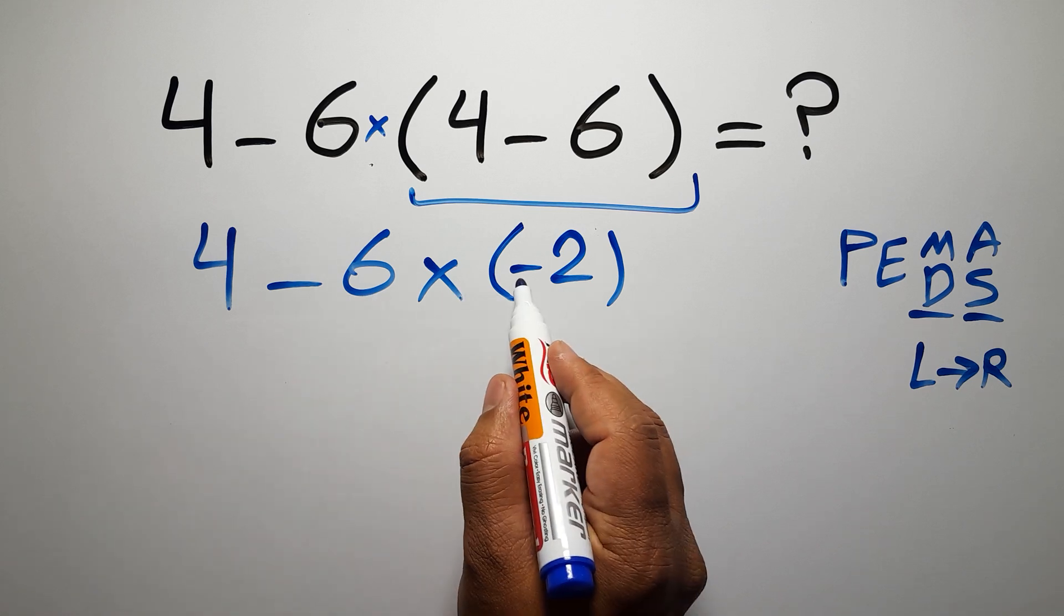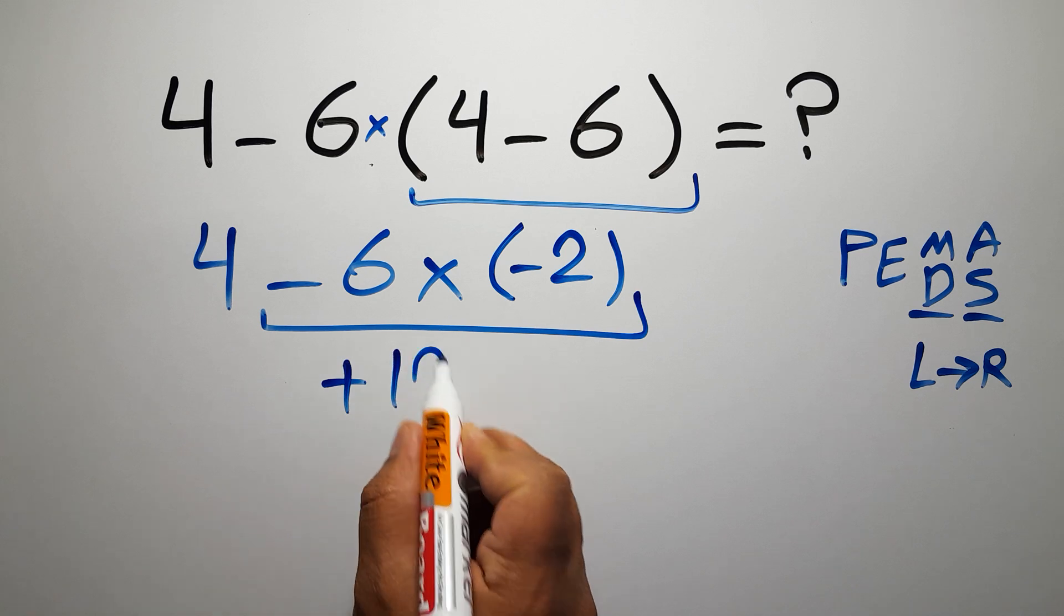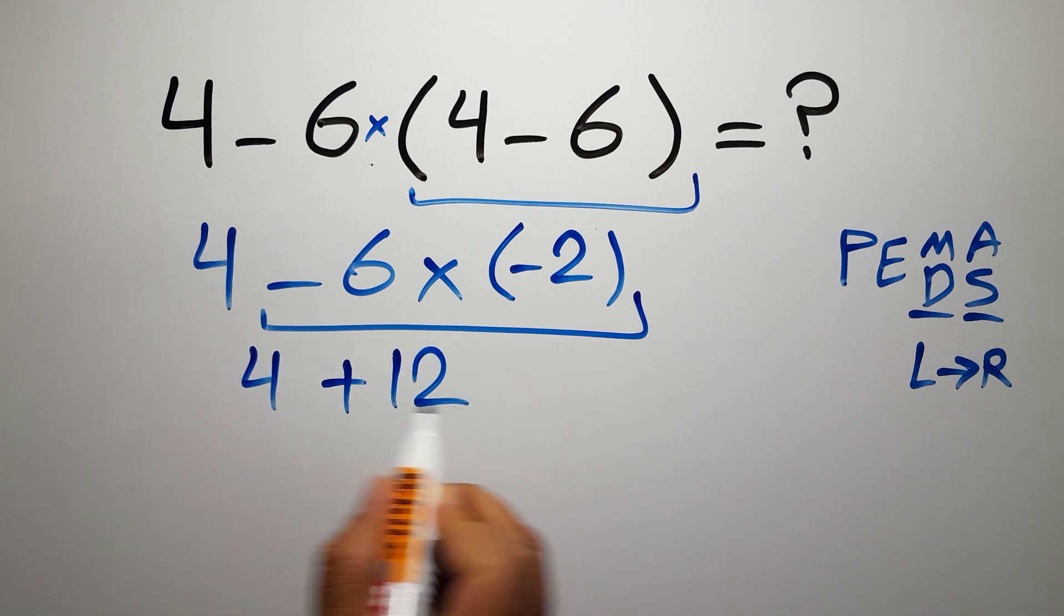Negative 6 times negative 2 gives us positive 12, and 4 plus 12 equals 16.